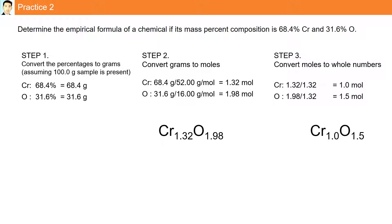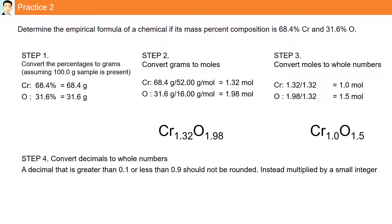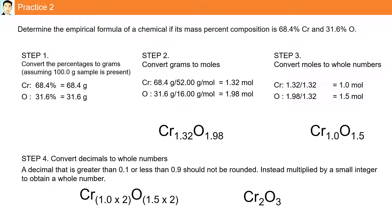We cannot have decimals, so we multiply by a small integer to obtain whole numbers. If a subscript is between 0.1 and 0.9 (or a non-integer), multiply all subscripts by a small integer. Chromium: 1 multiplied by 2 gives 2. Oxygen: 1.5 multiplied by 2 gives 3. Our final formula is Cr2O3 — the empirical formula for a chemical with 68.4% chromium and 31.6% oxygen.